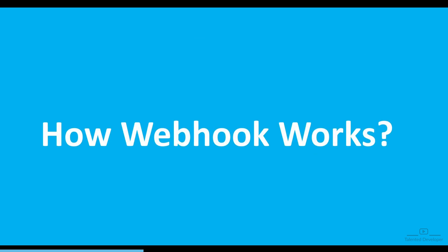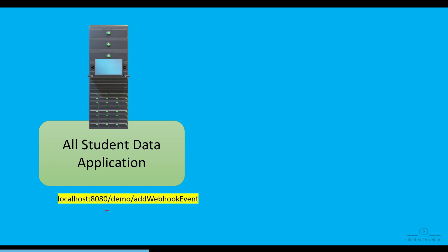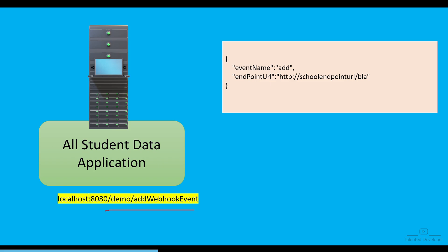Let's understand how webhooks will work and solve this problem. The student data application will implement a new API: demo slash add webhook event. Using this, schools need to provide some data — the student data application will ask each school to provide an event name, and the school must also provide an endpoint URL where the student data application can send all the student data.